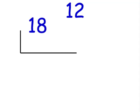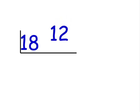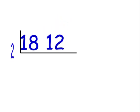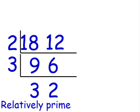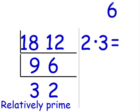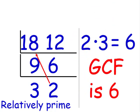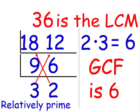Let's take a look at another example: 18 and 12. What number can go into 18 and 12? A person may say 2. 18 divided by 2 is 9, and 12 divided by 2 is 6. But wait — 3 can divide 9 and 6. 9 divided by 3 is 3, and 6 divided by 3 is 2. Now we have two relatively prime numbers. Our GCF is 2 times 3, which is 6. Our LCM is 2 times 18 or 3 times 12, which is 36. 36 is the LCM.